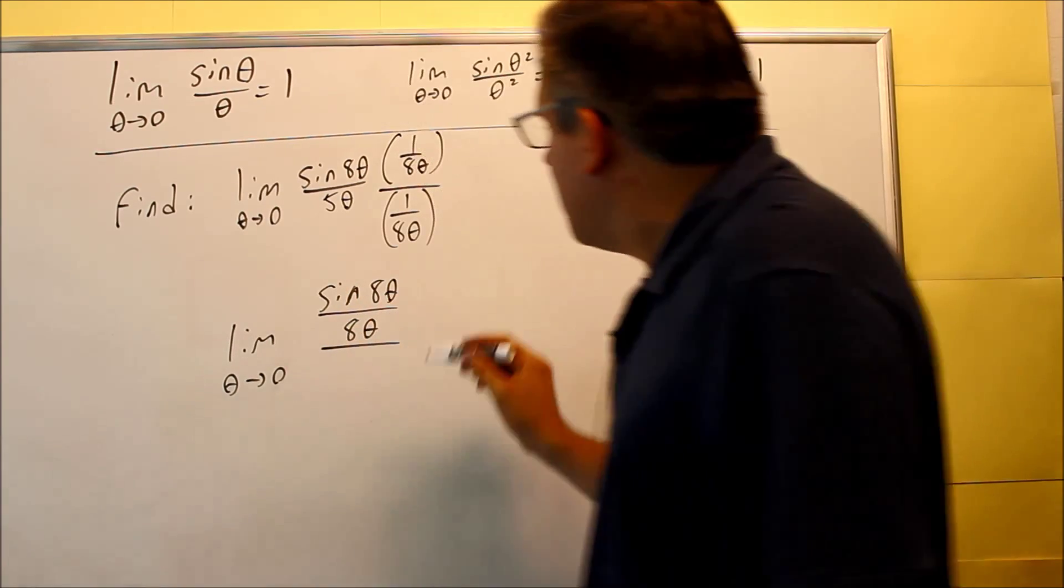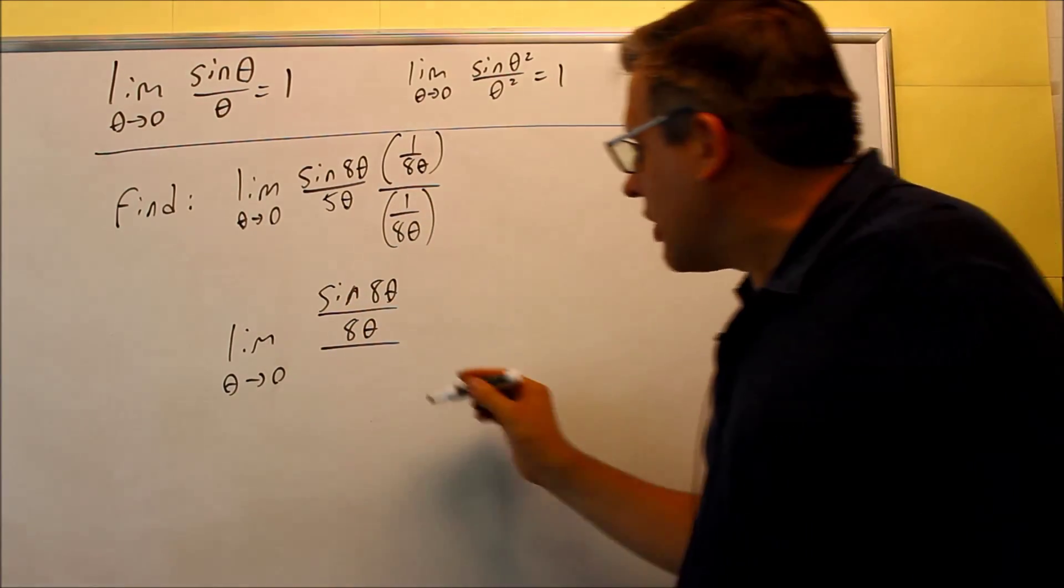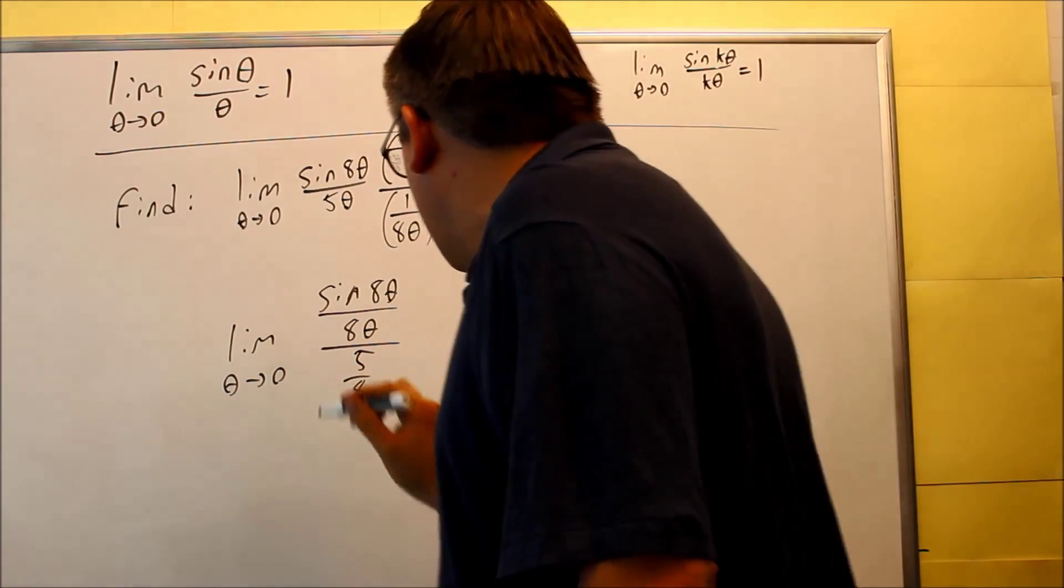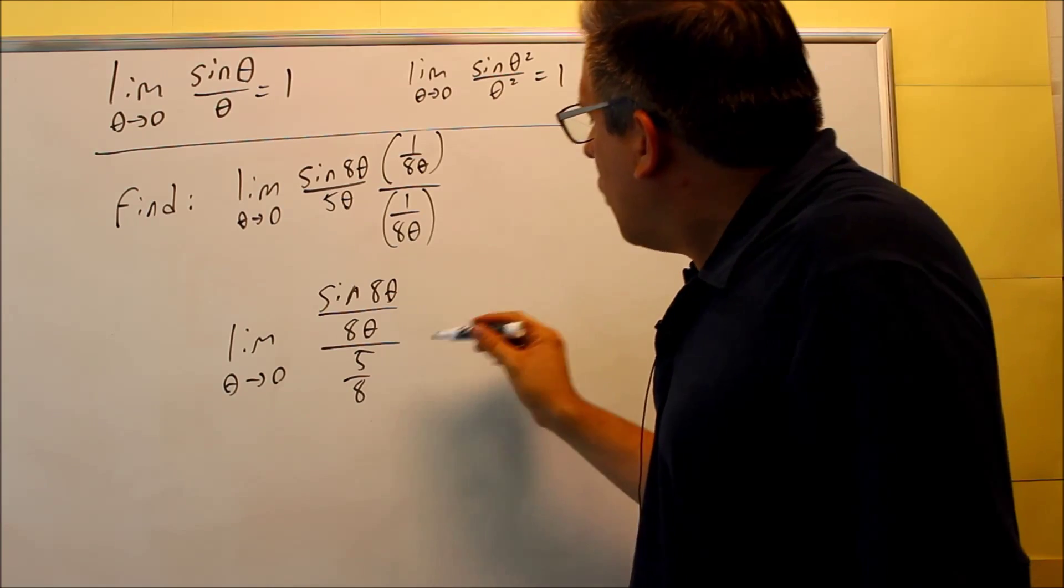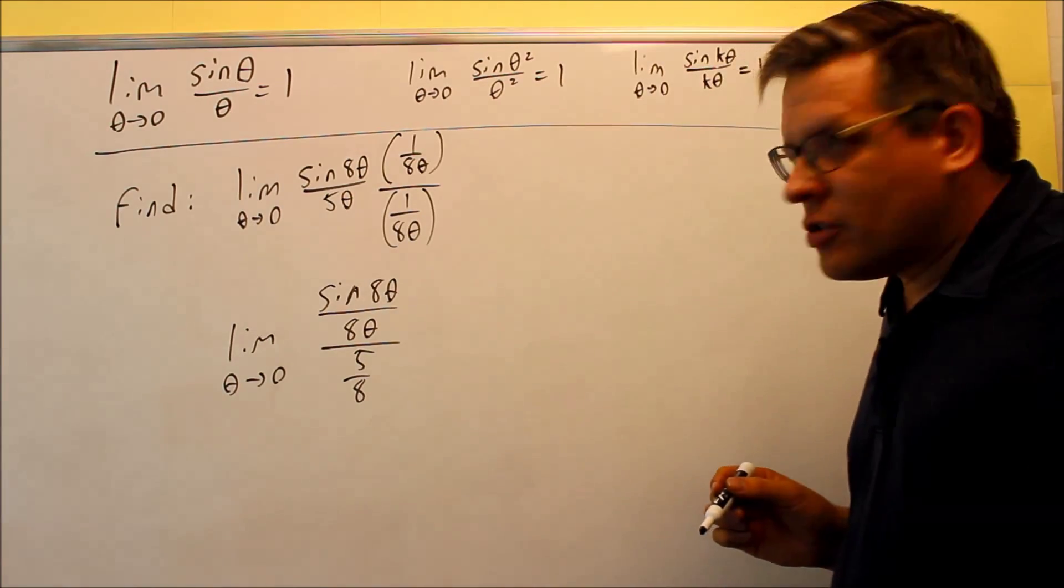On the bottom, the thetas are going to cancel out and you're going to end up with five over eight. So see what would happen when we multiply top and bottom. We end up creating these two separate fractions.